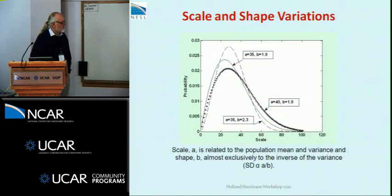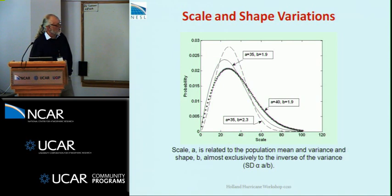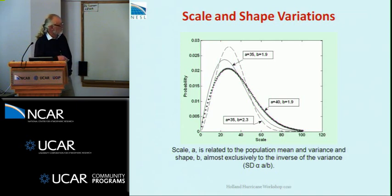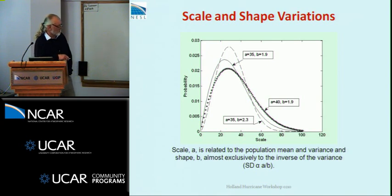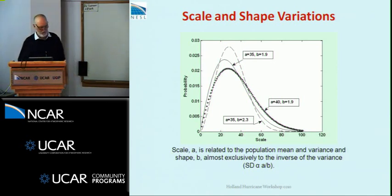To show how this works, here are a few examples. I picked A equals 35, B equals 1.9 as the solid line — this is about what current hurricane tropical cyclone climate in the North Atlantic fits to. If I change A up to 40, you can see the spread and change in amplitude. If I change B up to 2.3, you can see the decrease in standard deviation — a shrinking down and more peaked aspect of the profile.